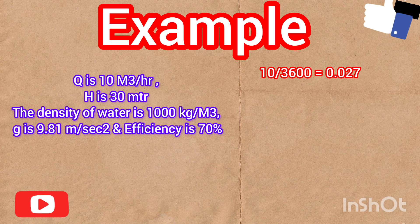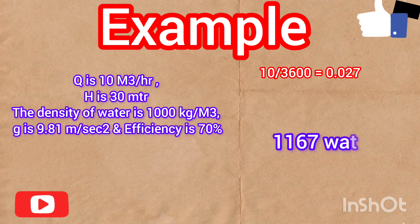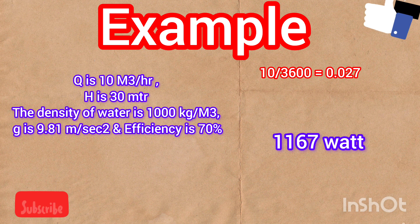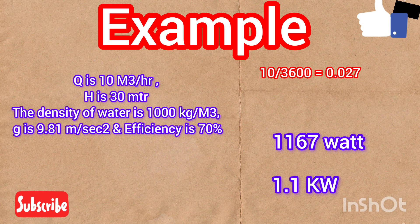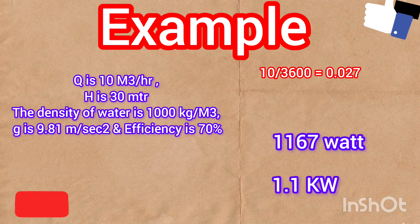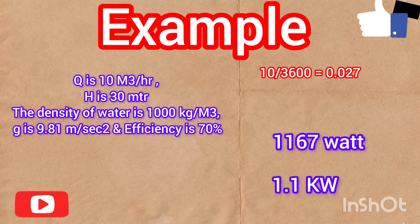By putting all the values, the final answer is 1167 watts which is 1.167 kilowatts. We can assume it as approximately 1.17 kilowatts. This is a very simple example.